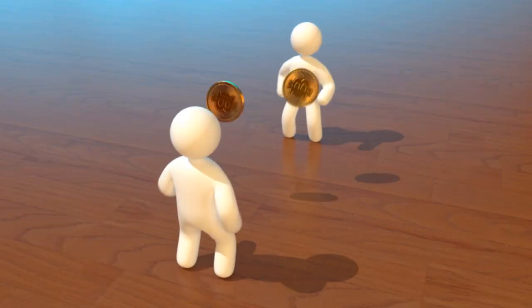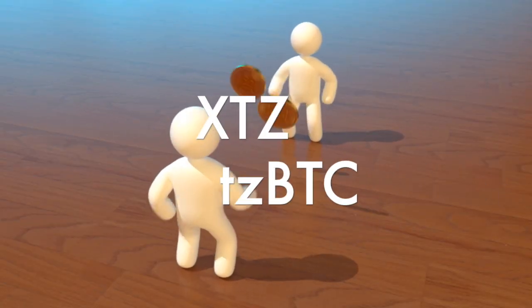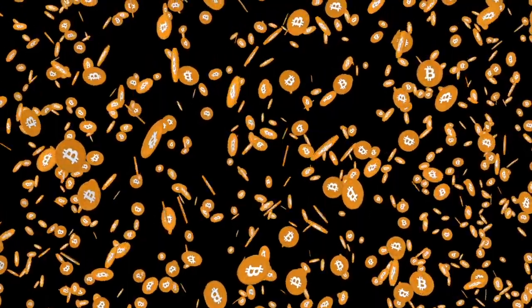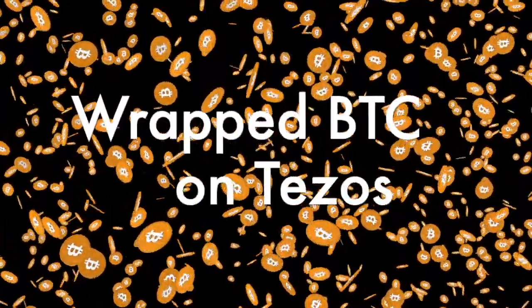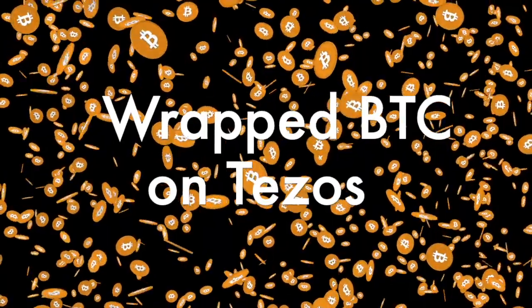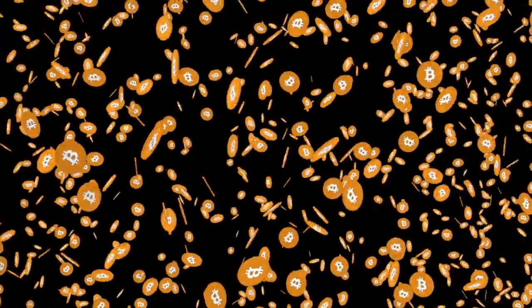The core of Liquidity Baking on Tezos revolves around the XTZ-TZBTC trading pair. Here, TZBTC represents a Tezos-wrapped version of Bitcoin, creating a bridge between the Bitcoin and Tezos ecosystems.